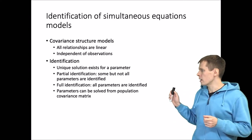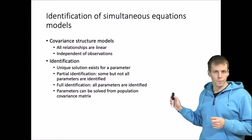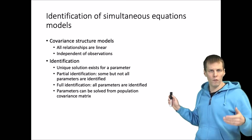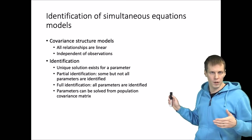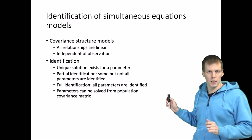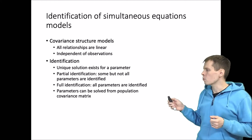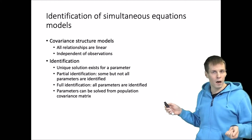The principle of identification is that we need to be able to solve for unique values for each parameter from the population matrix, and there are two different ways of demonstrating that this can be done.